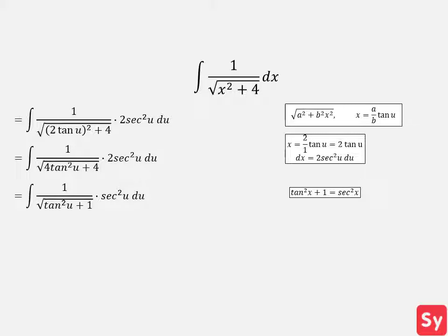Tangent squared of x plus 1 equals secant squared of x. We can use this trig identity and substitute secant squared u in for the expression in the radical.